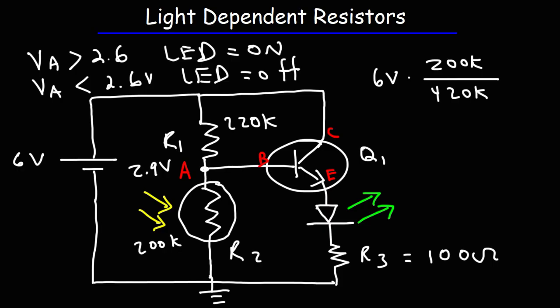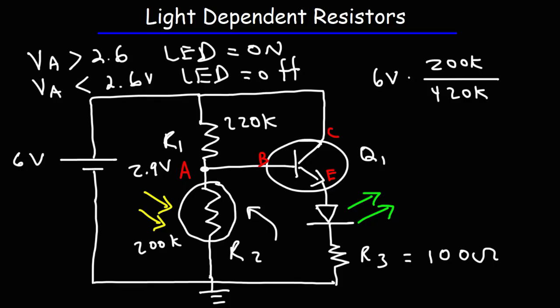That's why you need to measure the resistance of the LDR when the light is on and when it's off, so you can use the appropriate R1 value. You need to set it such that VA will be at the right level to turn the LED on or off. Let's see what happens when the light is turned on.